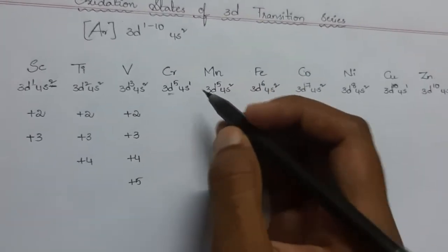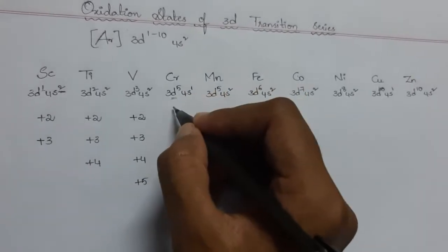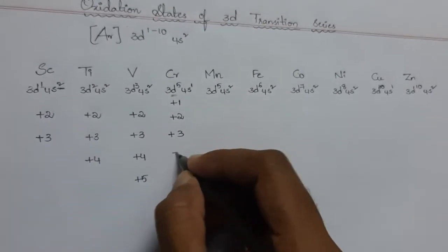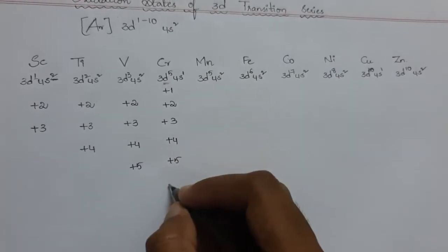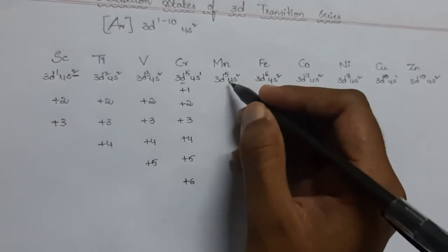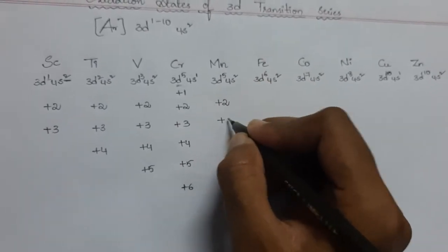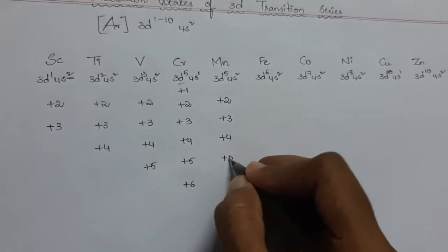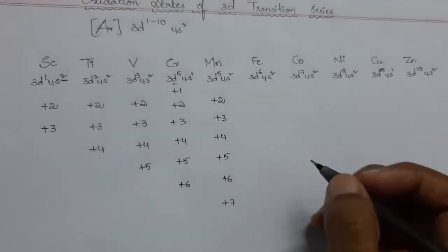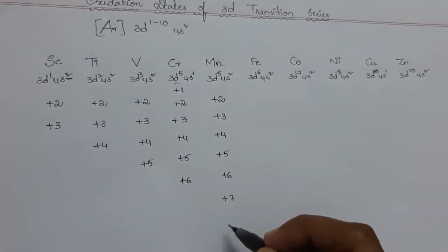For chromium, the s orbital contains only one electron, so when it loses that one electron it acquires an oxidation state of +1, and it can also exhibit +2, +3, +4, +5, and +6. Manganese has 3d⁵ 4s², so it can give oxidation states of +2, +3, +4, +5, +6, and +7. Manganese has the highest oxidation state of +7 in this series.